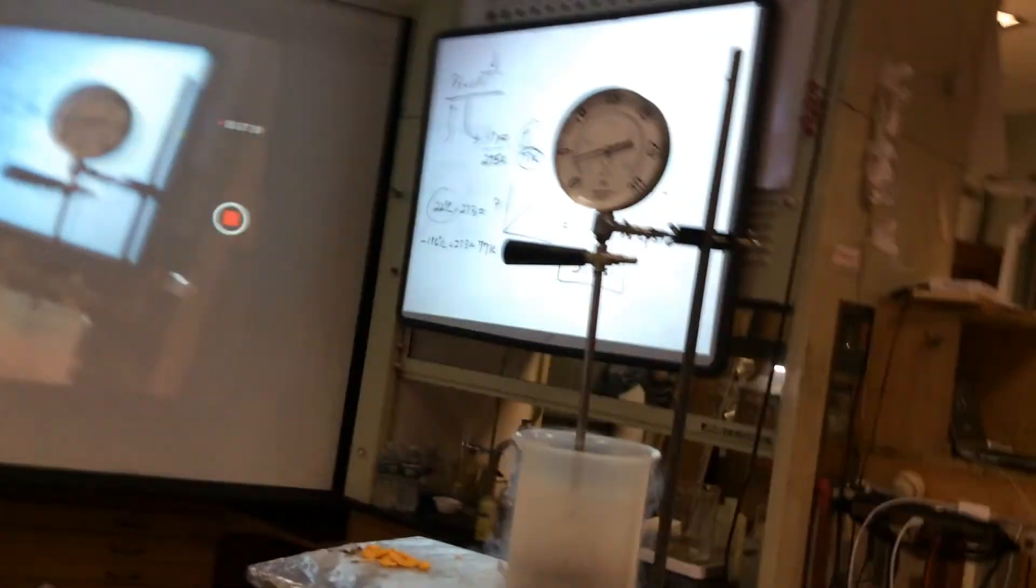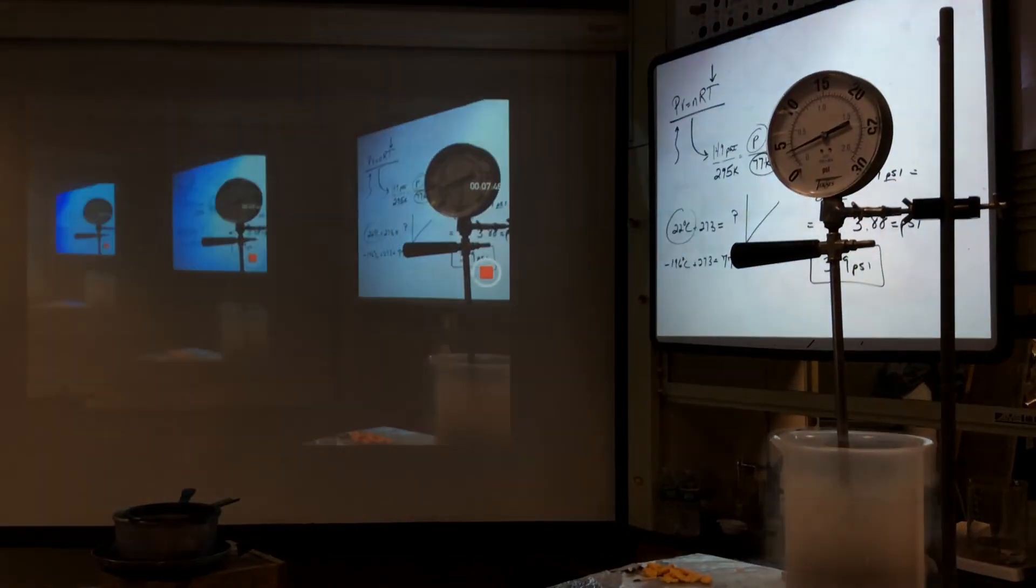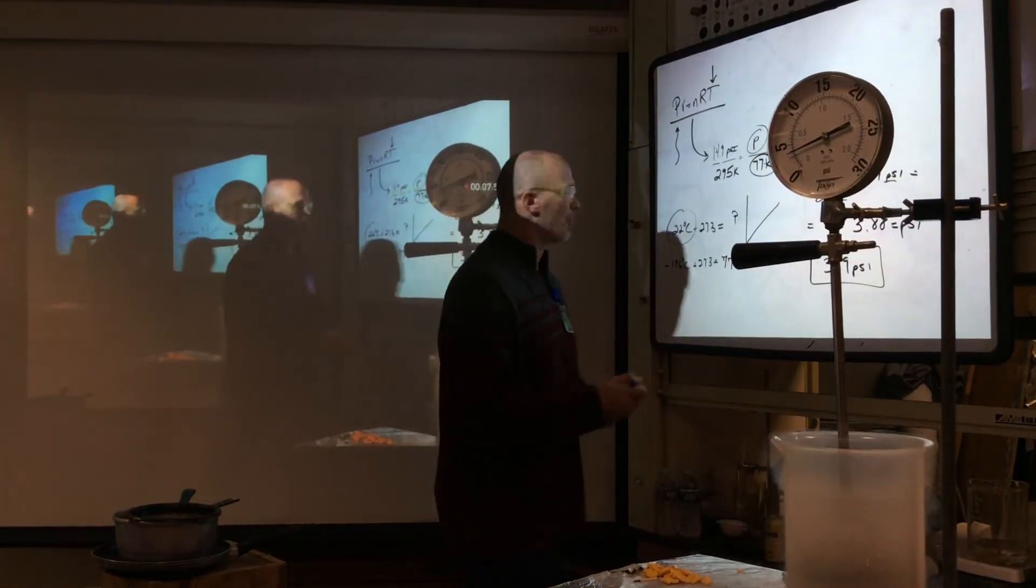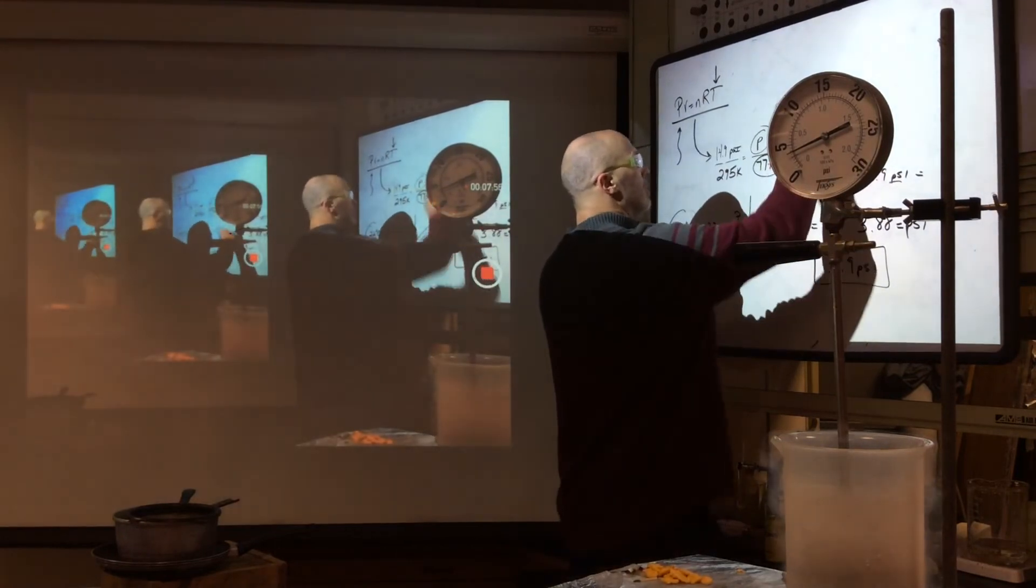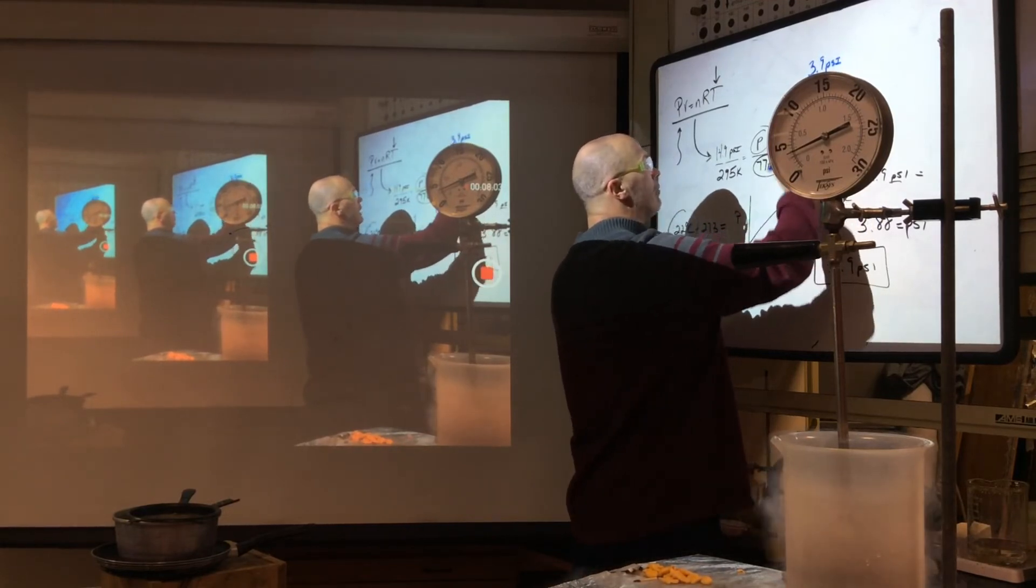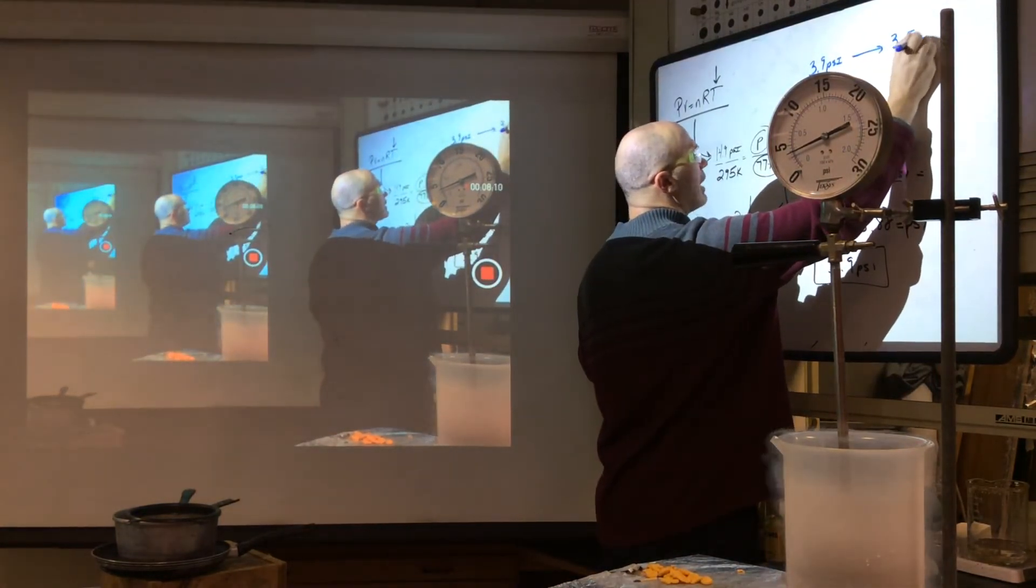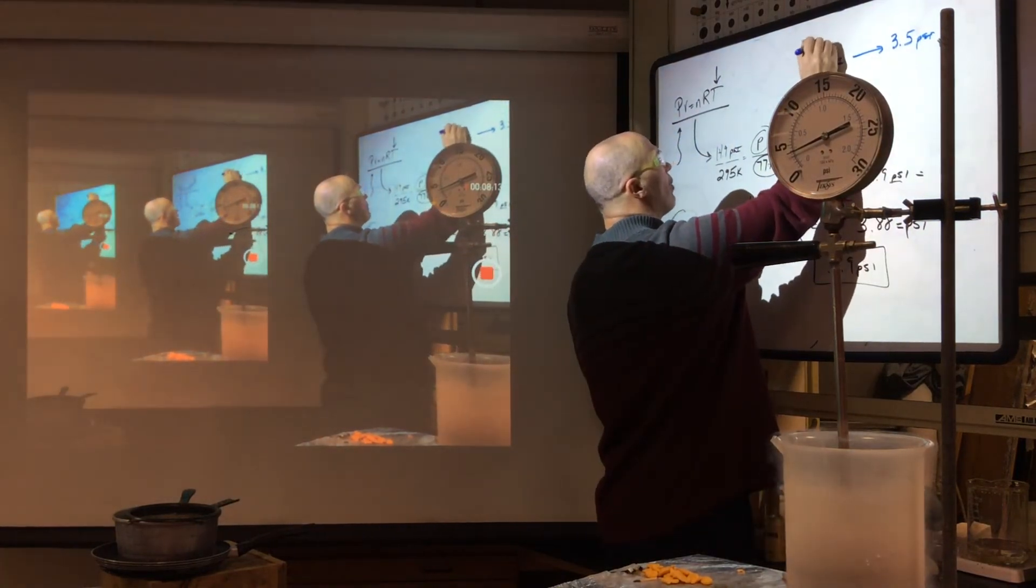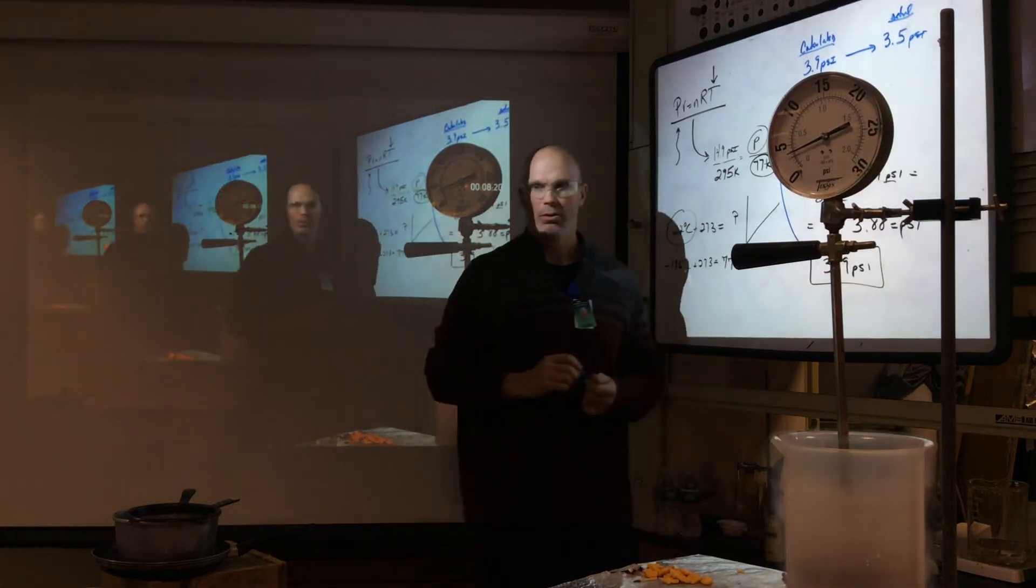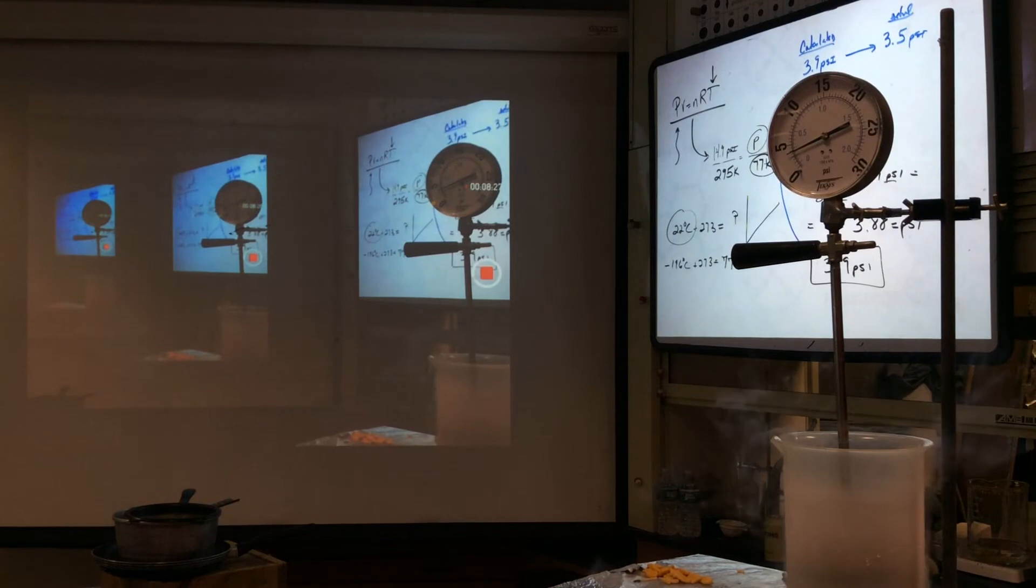It's a tad greater than that. It's 3.5-ish. And what did we expect? 3.9. So why? Let's think about this for a second, party people. We expected 3.9 PSI. What we got was 3.5 PSI. So we calculated for 3.9, but actually got 3.5. Why was our pressure lower?